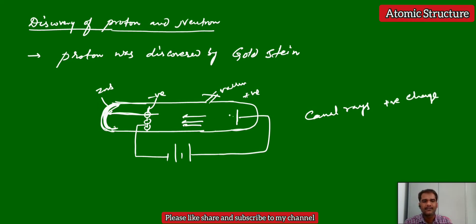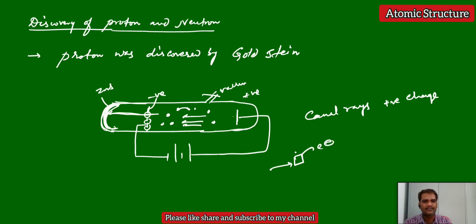Canal rays carry positive charge because they are moving from the positive plate to the negative plate — they can only move toward the negative plate if they have positive charge. Originally, this glass tube contains gas molecules. When high voltage is applied, gas molecules ionize — they eject electrons. When electrons are ejected, the remaining particle becomes positive because removal of electrons gives a cation. The ejected electrons move toward the anode side — these are called cathode rays, as studied in Thomson's experiment.